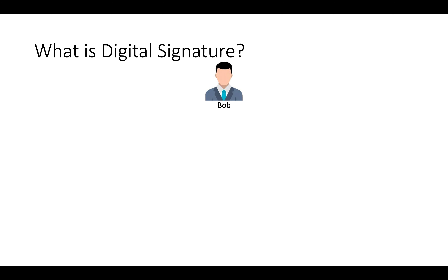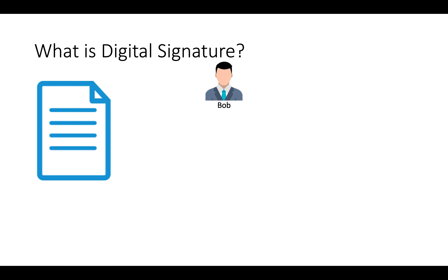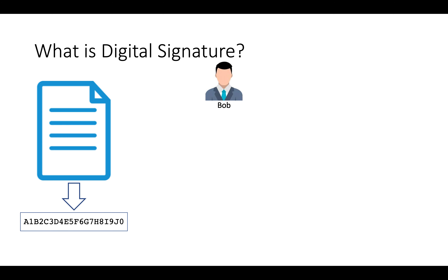Bob wants to sign one digital document. First, Bob will calculate hash of this document. He can calculate hash using MD5, SHA1, or similar. We use hash when sending a big size document over the internet. The good thing about hash is that irrespective of the size of the document, hash has a fixed number of bytes, like 32. If you change a single bit in the document, then its hash value gets changed.